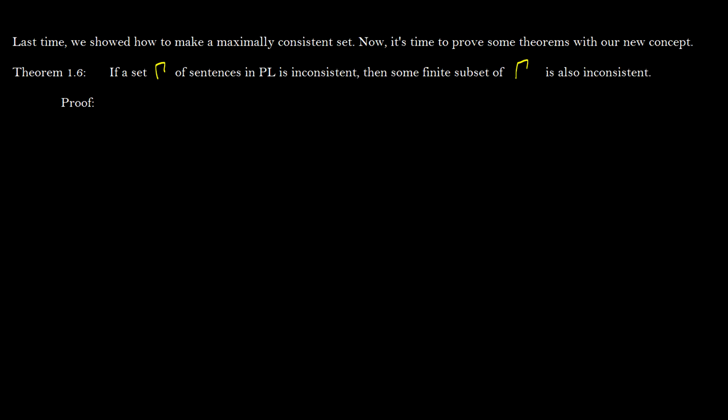A maximally consistent set is a set that contains everything that is not a contradiction. Theorem 1.6: if a set gamma of sentences in PL is inconsistent, then some finite subset of gamma is also inconsistent.